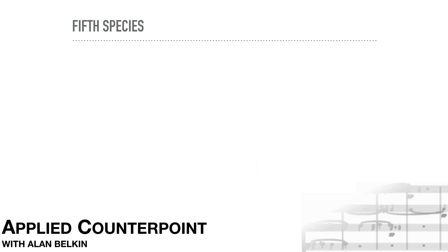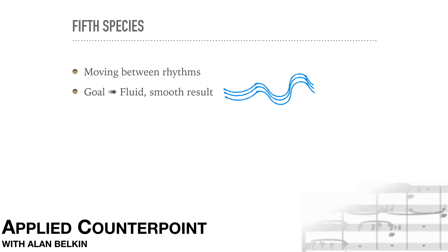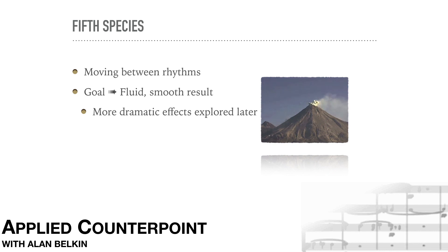We'll be moving between the rhythms of the previous species to create rhythmic variety. The goal is a fluid, smooth result. Of course, in real life there are many dramatic musical situations where fluid and smooth are not what we would want. But these situations can't be worked out convincingly within such a short exercise. So for now, think of this as music that remains quiet, reflective, and calm. Later in the course, however, we will examine some more dramatic possibilities of counterpoint.